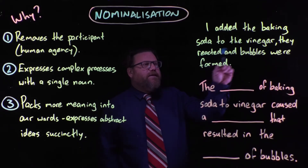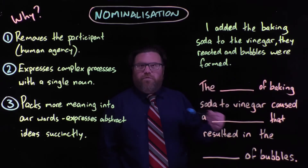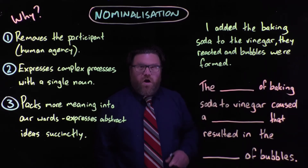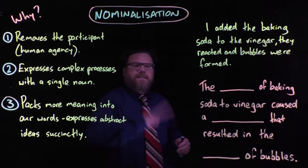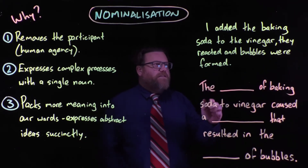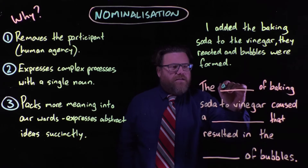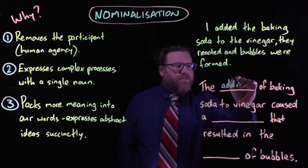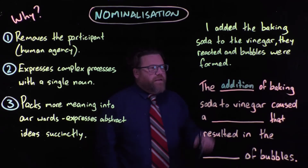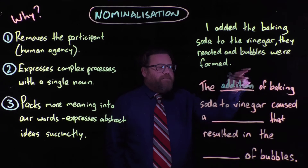Here's an example in that sort of setting. We've got this sentence: 'I added the baking soda to the vinegar. They reacted and bubbles were formed.' It's very active and it has the first person pronoun 'I' in there. So let's nominalise and get rid of that human agency. Instead of 'I added the baking soda', we can take the verb 'adding' and turn it into the noun 'the addition of baking soda' — and that gets rid of the 'I'. The addition of baking soda to vinegar...